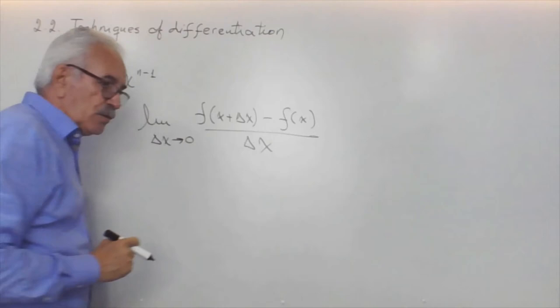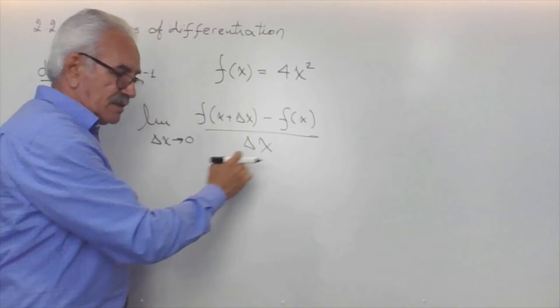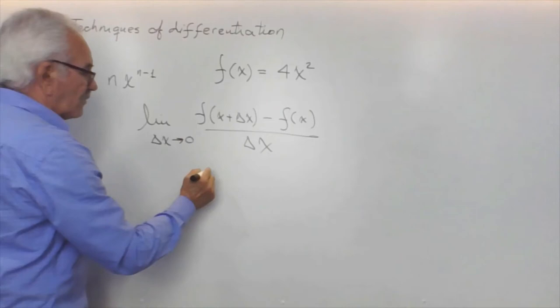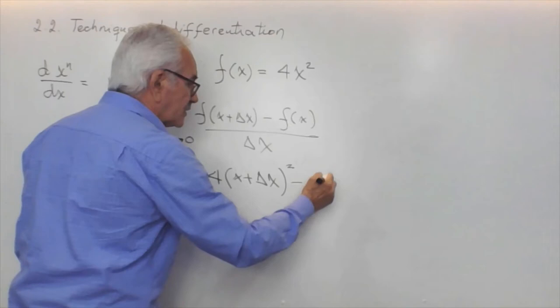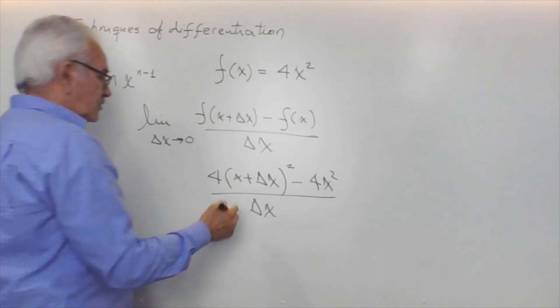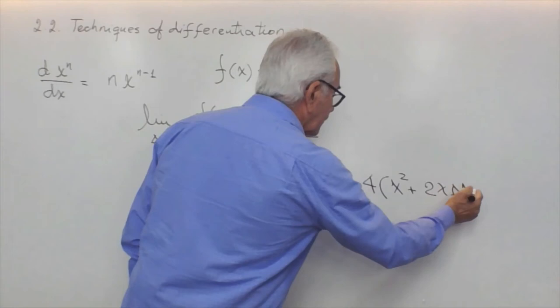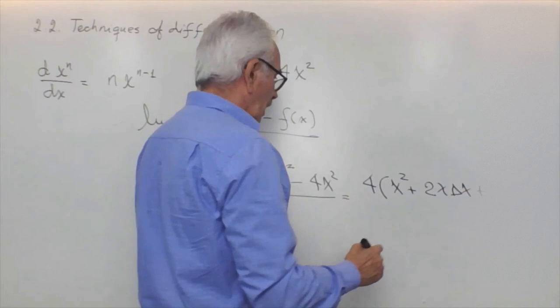Let me show you one example. Suppose we have f(x) equals 4x². Today you don't need to apply the limit definition of the derivative, but I am using it only to show you that the result will be exactly the same. So in this case we have 4 times (x + Δx)² minus 4x² divided by Δx. This will equal 4 times (x² + 2x·Δx + Δx²) minus 4x².